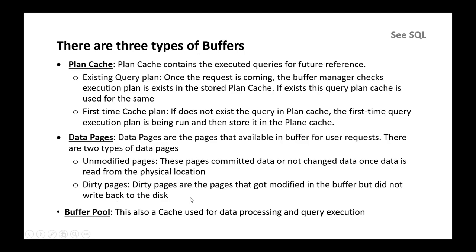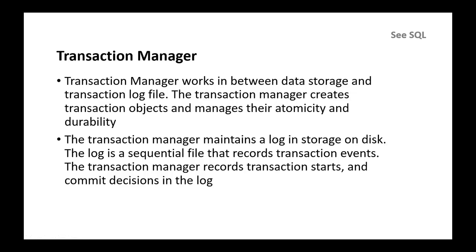Data that is modified but not yet committed is known as dirty pages. The third buffer type is buffer pool, which is also a cache used for data processing and query execution. These are the three types of buffers: plan cache, data pages, and buffer pool.